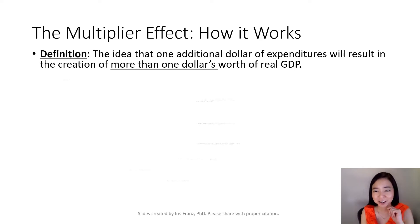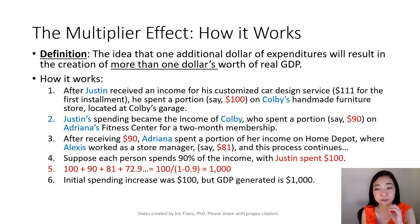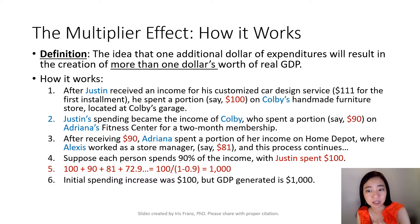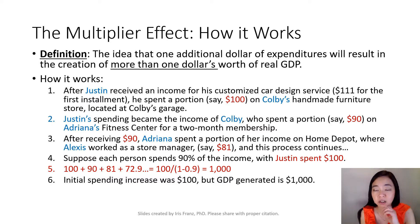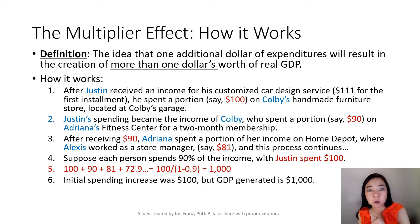So how does that work? Here is an example. Suppose Justin designs cars for a living. Suppose he receives his first installment of car designing service, say $111. He spent a portion of it, say 90% of it, which is $100, on Colby's handmade furniture store. So Justin spending $100 will become Colby's income.